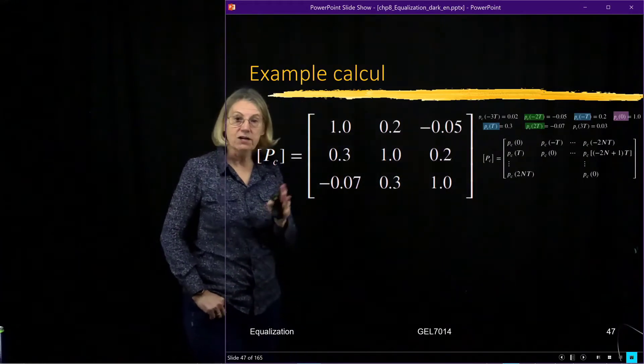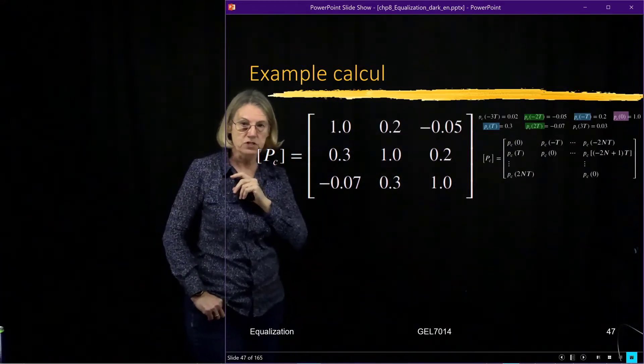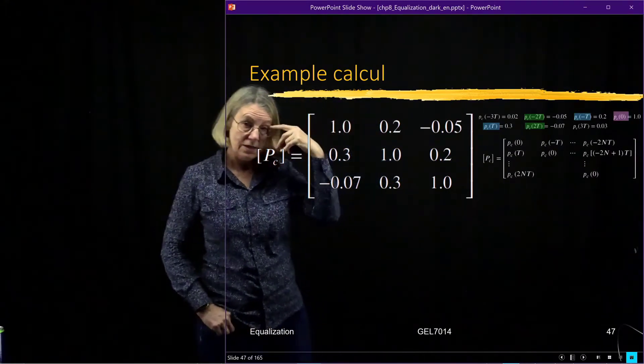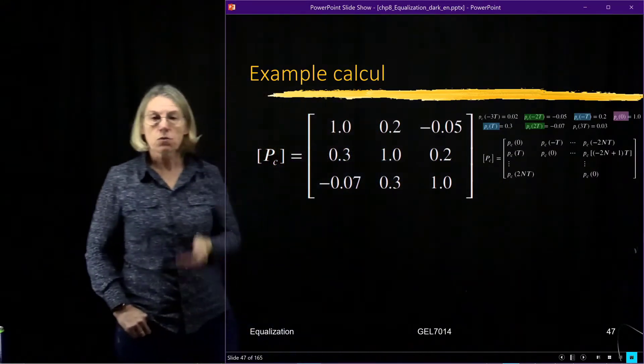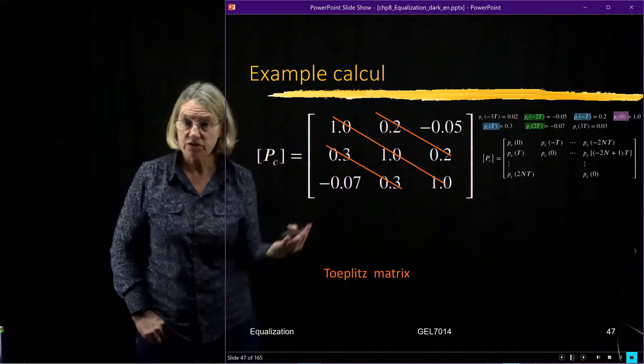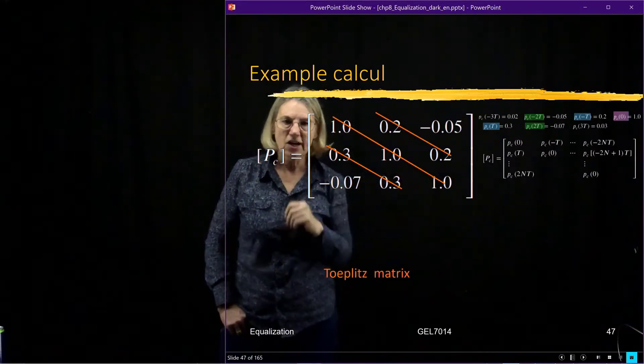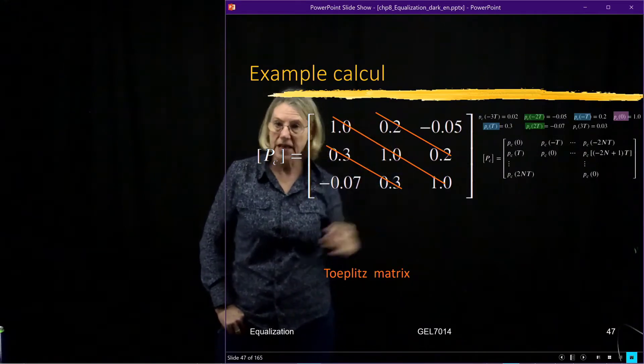I decided here I'm going to just do three taps, which is why there's just the three columns and three rows in this matrix. One thing I'd like to point out is the structure of this matrix. You'll notice that all the values on the diagonal are constant, and that's true for all the sub-diagonals as well.